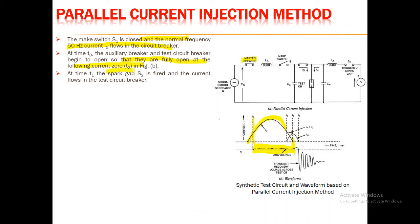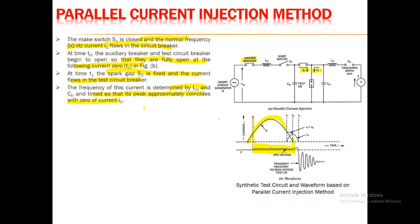At time T1, the spark gap S2 is triggered and the current flows in the test circuit breaker, which is the combination of IG and IH. The frequency of this combined current is determined by LH and CH, and the timing is such that its peak approximately coincides with the zero of IG. As seen in the waveform, at instant T1 the spark gap is triggered, resulting in the total current through the circuit breaker under test being IG plus IH.